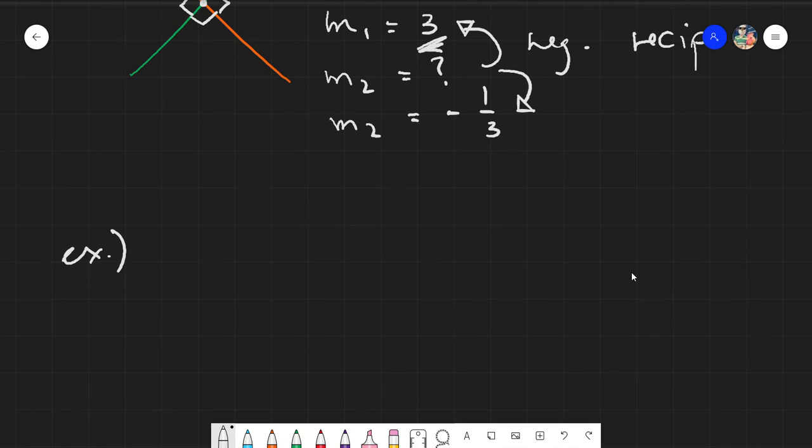Or parallel. So say we have this line, and you are asked, find the line that is parallel to this specific line L that passes through this specific point, this point P. It passes through there.